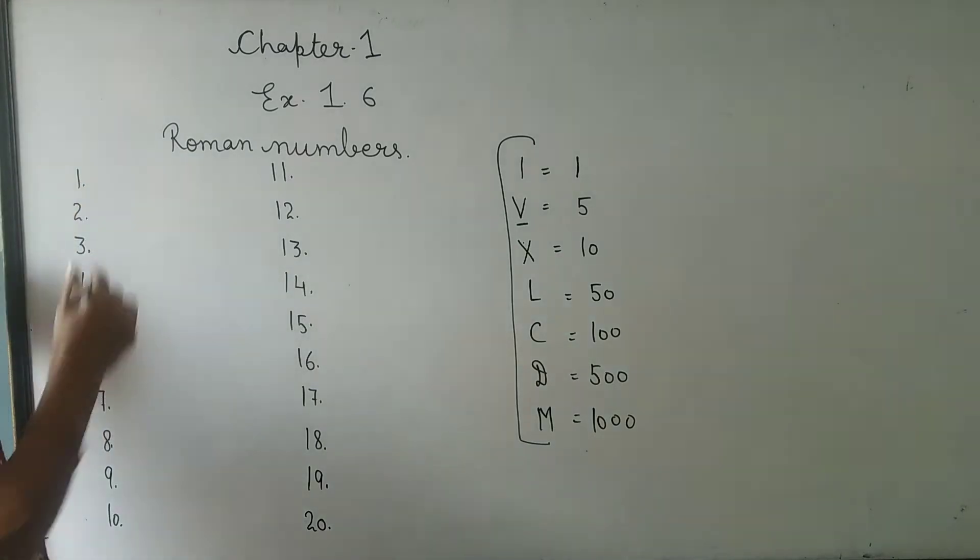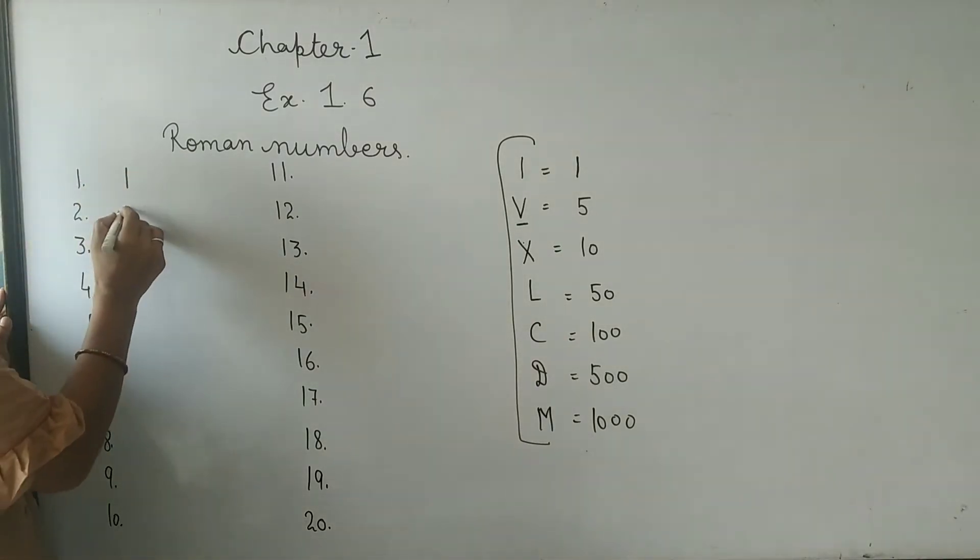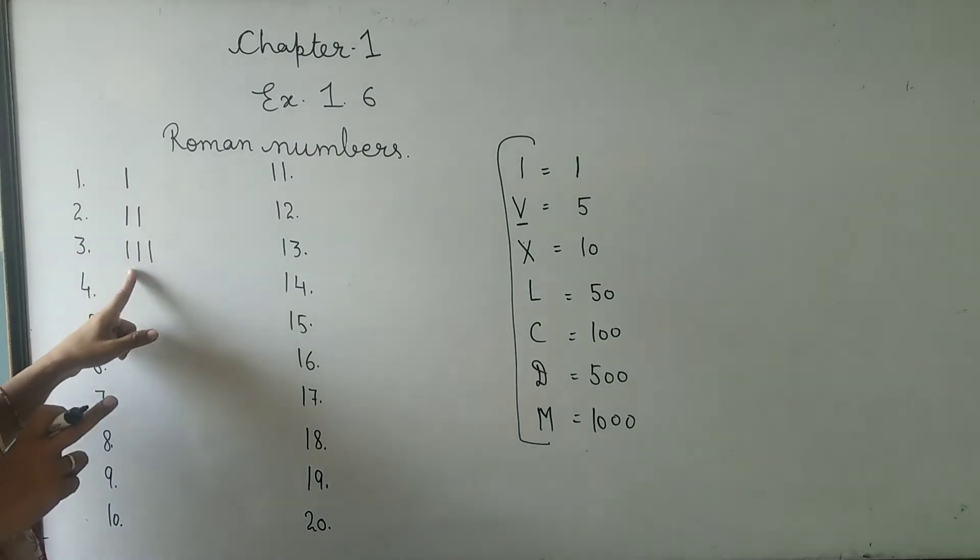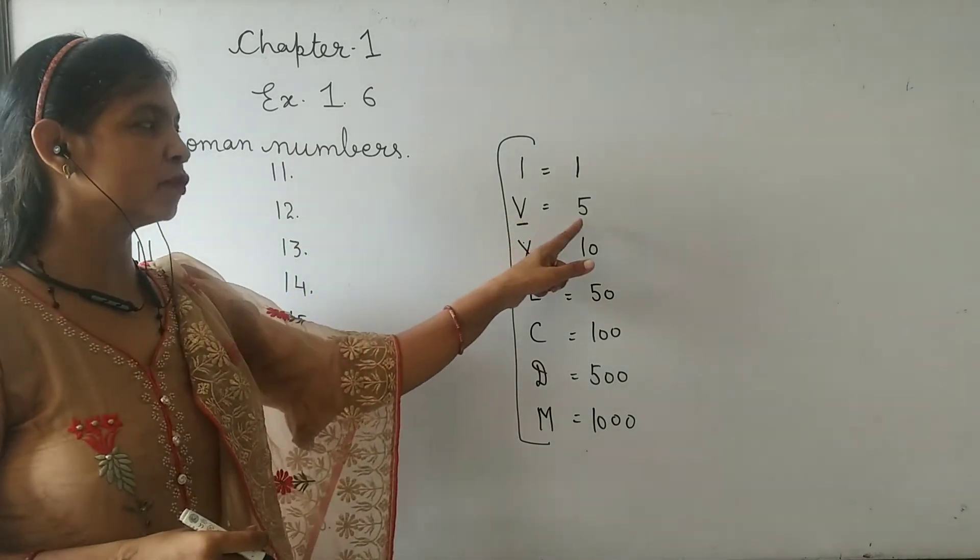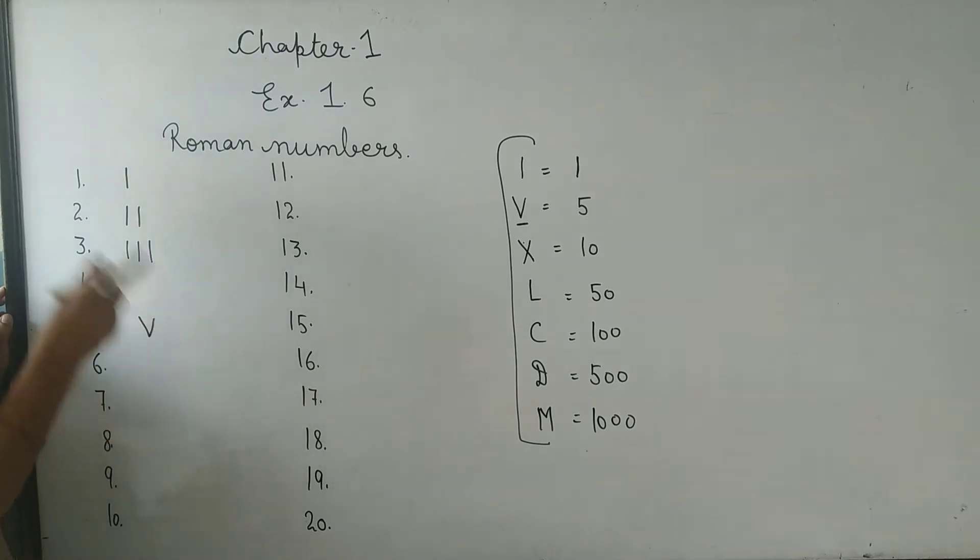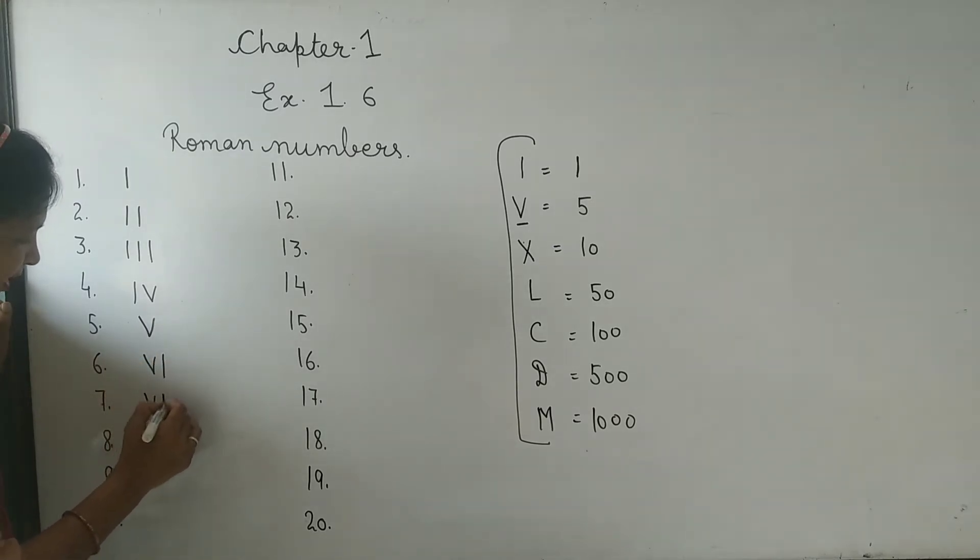First of all, number one is I. Two is II. Three is III. Four, how do we write 4? 5 is V. Now 6, V plus 1 is VI. 5 plus 2 is VII, which is 7. 5 plus 3 is VIII, which is 8. Now 9, 9 is IX, one before 10.